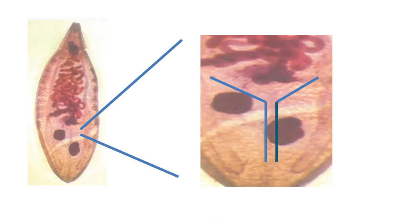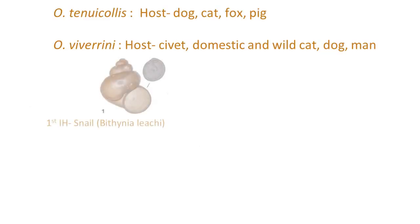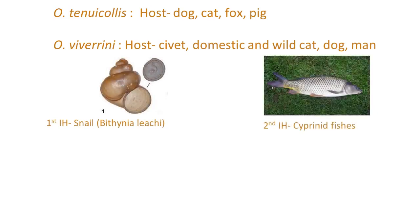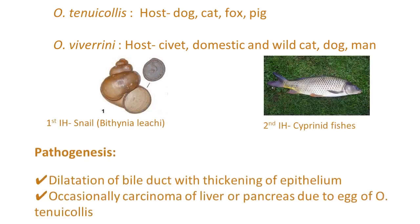It crosses between the diagonal testes and forms a Y shape. The intermediate hosts of the parasite are: 1st Intermediate Host is Snail, and 2nd Intermediate Host is Cyprinid fishes.